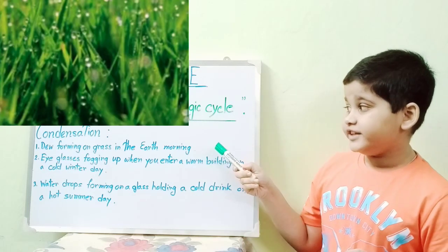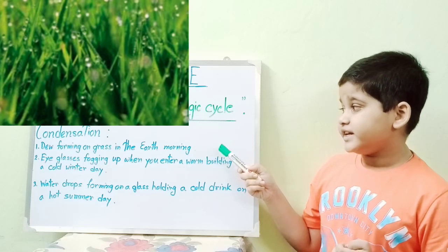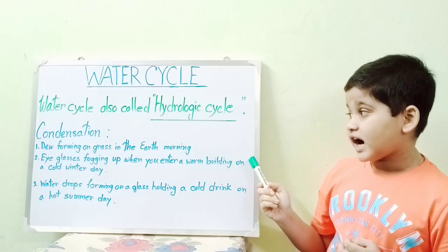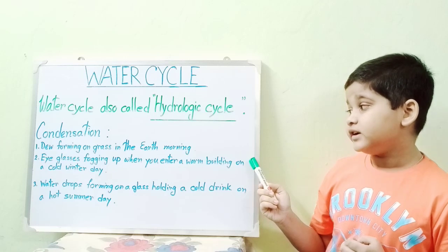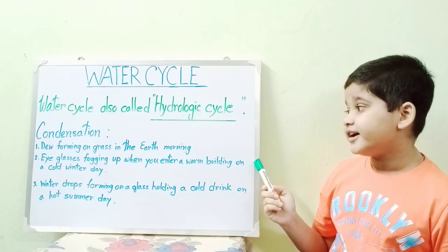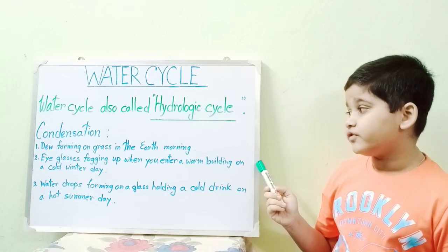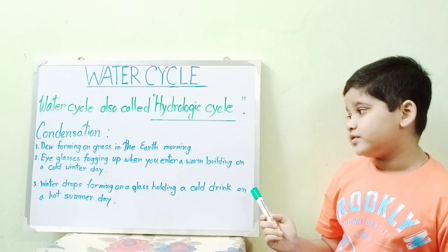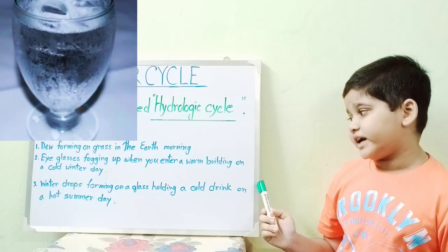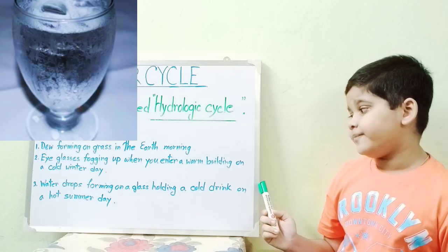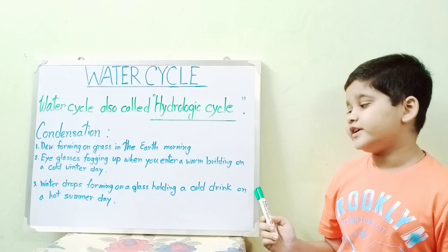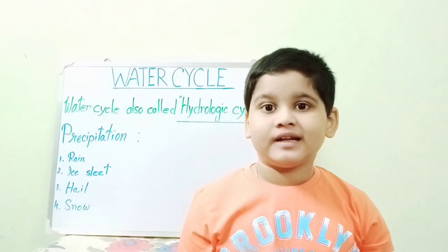Some common examples of condensation are: 1. Dew forming on grass in the early morning. 2. Eyeglasses fogging up when you enter a warm building on a cold winter day. 3. Water drops forming on a glass of cold drink on a hot summer day.